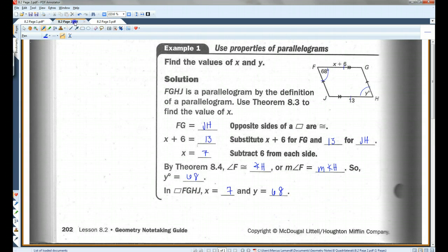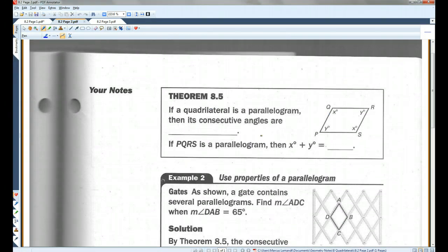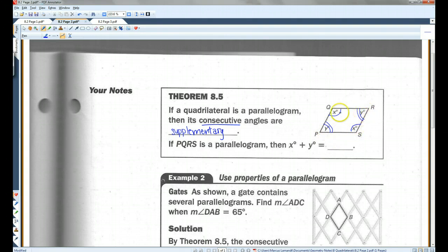All right, let's go on to page 2. If a quadrilateral is a parallelogram, then its consecutive angles are supplementary. Now, remember, supplementary means they add up to 180. And consecutive means the angles are right next to each other. So, this angle and this angle are supplementary. This angle and this angle are supplementary. This angle and this angle, supplementary. And these two. So, any angles that are consecutive, any angles that are on the same side, are supplementary. So, if PQRS is a parallelogram, then X plus Y equals 180 degrees.